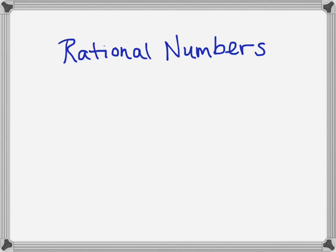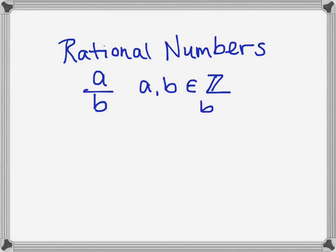Rational numbers are numbers which can be written as fractions. In symbols, rational numbers are numbers which look like A over B, where A and B are integers — A and B are elements of the integers — and we also say that B cannot be zero.